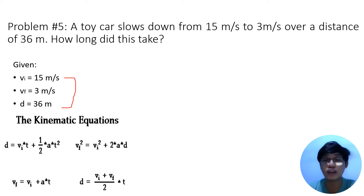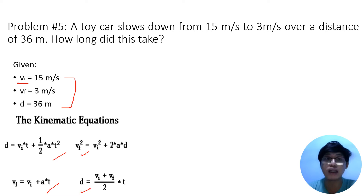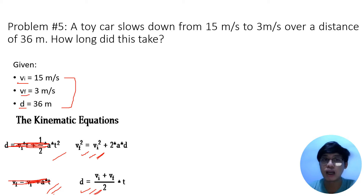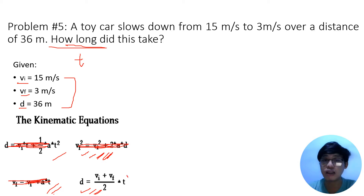Looking at the equations, all of them have initial velocity. For final velocity, one equation doesn't have it, so we eliminate that. We're left with three. Checking for distance, one equation has no distance, so we eliminate it. Now we have two remaining. Going back to the question — 'how long?' — we're looking for time. One of the two equations has no time, so we eliminate it. The remaining equation with time is: distance equals (final velocity plus initial velocity) divided by 2, multiplied by time.